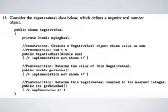Let's see question 18. Consider the NegativeReal class below, which defines a negative real number object. It has a private variable of type double called myNegReal. There is a constructor that creates a NegativeReal object whose value is num, with the precondition that num is less than zero. The constructor implementation is not shown. The first post condition is that getValue returns the value of this negative real. The second post condition is that getRounded returns this negative real rounded to the nearest integer.